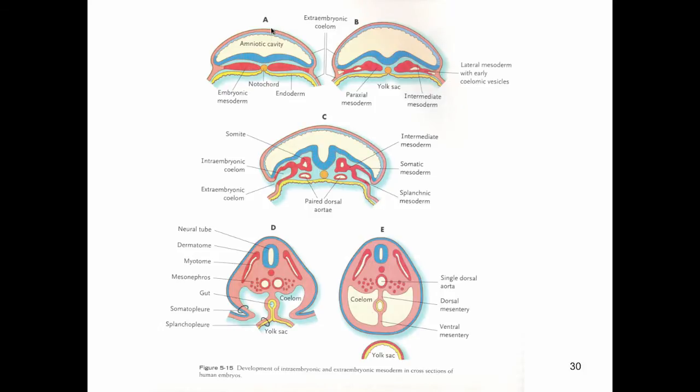The embryonic disc is trilaminar, meaning three layers: endoderm, ectoderm, mesoderm. The embryo is flat, so it looks like a disc. Up here I told you was the amniotic fluid and the amniotic cavity. Down here we've got the endoderm that's going to form the GI tract, the mesoderm, and the ectoderm that's going to form, among other things, the central nervous system.